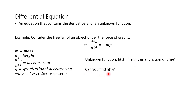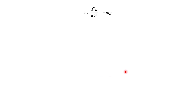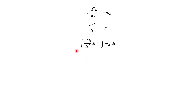Can you find this unknown original function just from knowing this differential equation? Let's work it out. First, divide both sides of the equation by m. Now we are looking for h, but all we know about is the second derivative of h. So we need to integrate — integrate both sides of our equation with respect to t. On the left side, we go from the second derivative to the first derivative of h with respect to t.